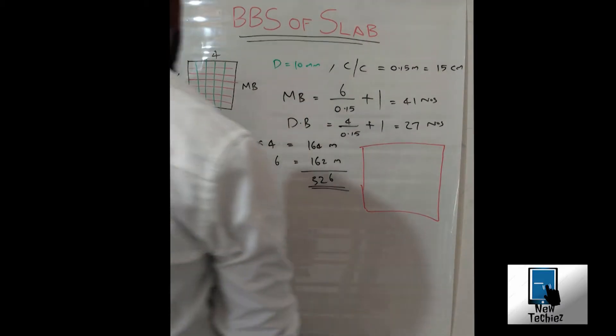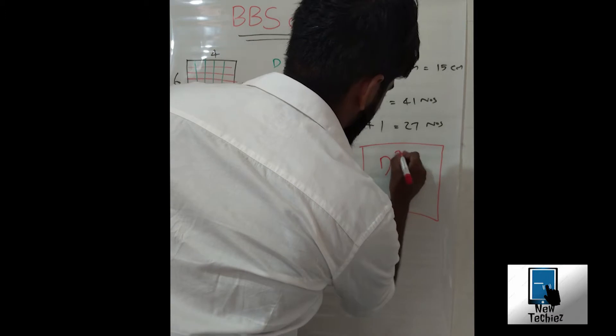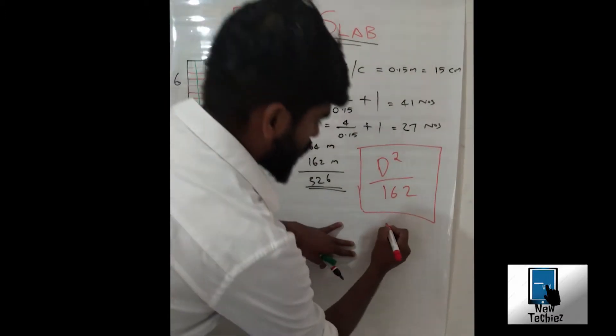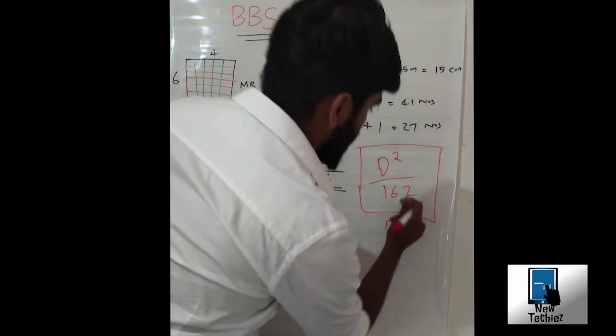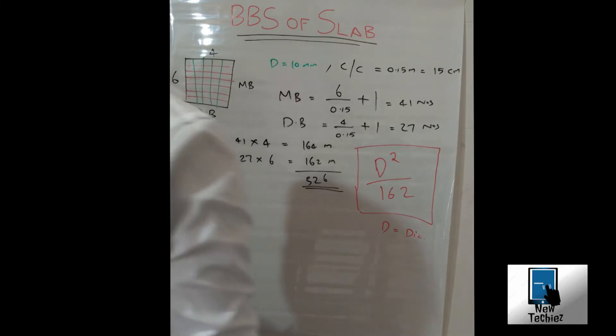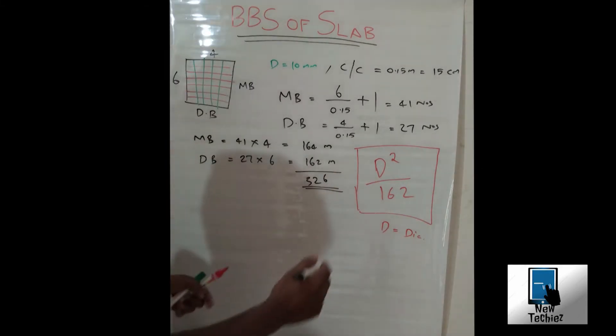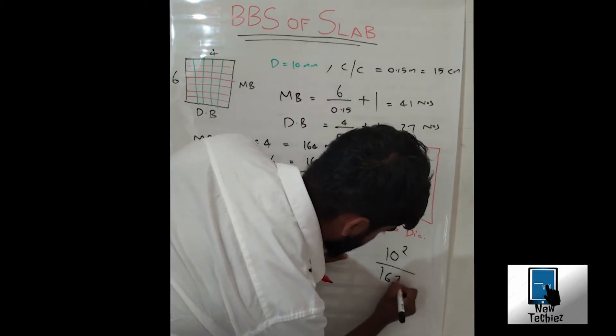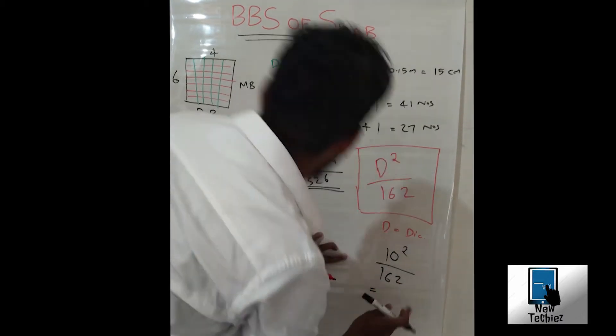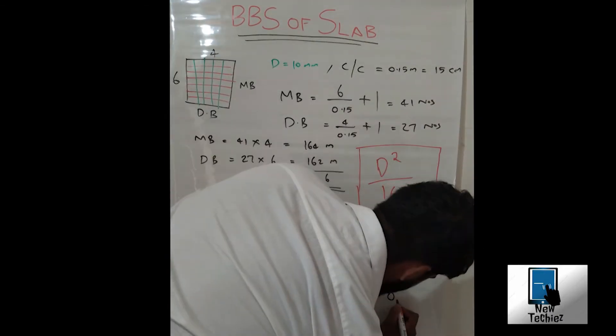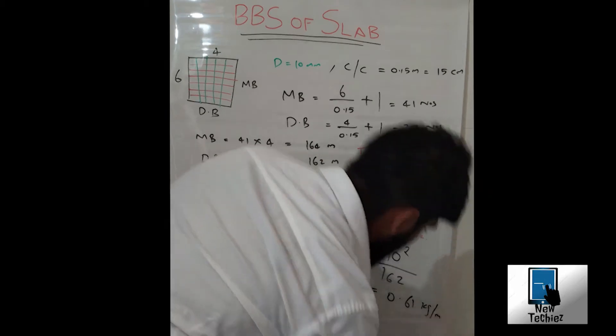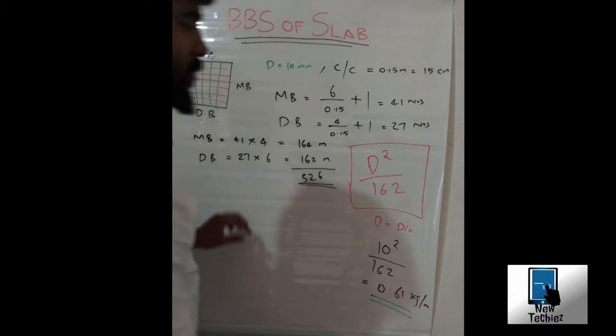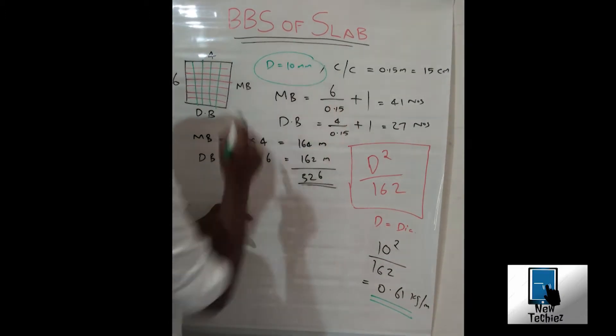Everyone should know the unit weight of the steel, that is D square divided by 162, where D equals diameter. Let us check for our reinforcement. D square divided by 162, we get a value of 0.161 kilogram per meter. This is for our diameter of 10 mm bar.